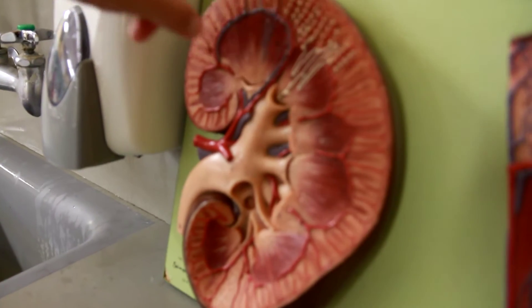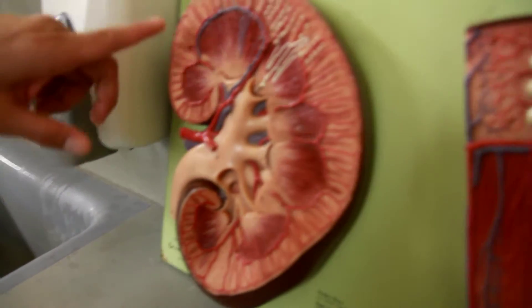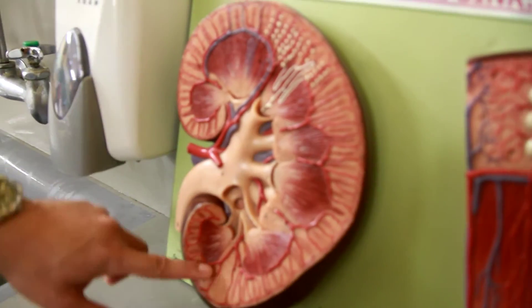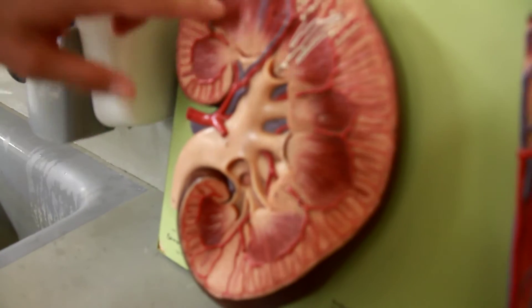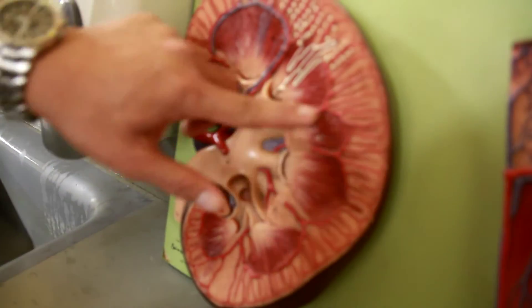This is a kidney. Renal capsule. Capsule cortex is the outside, and you have the medulla inside, which contains the pyramids. And in between the pyramids you have the columns, renal column.